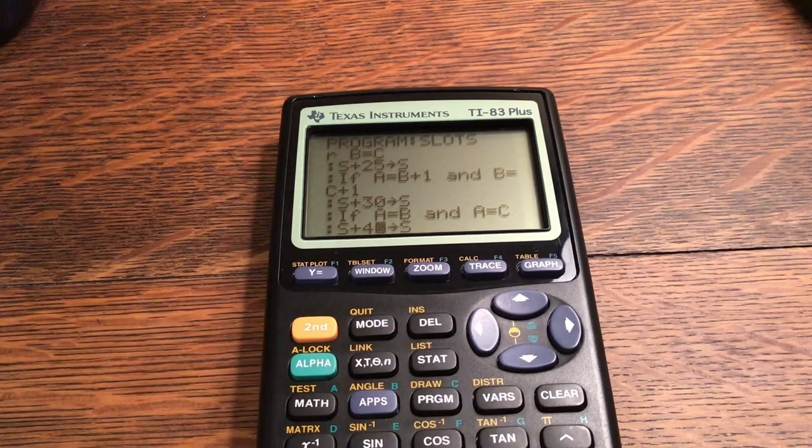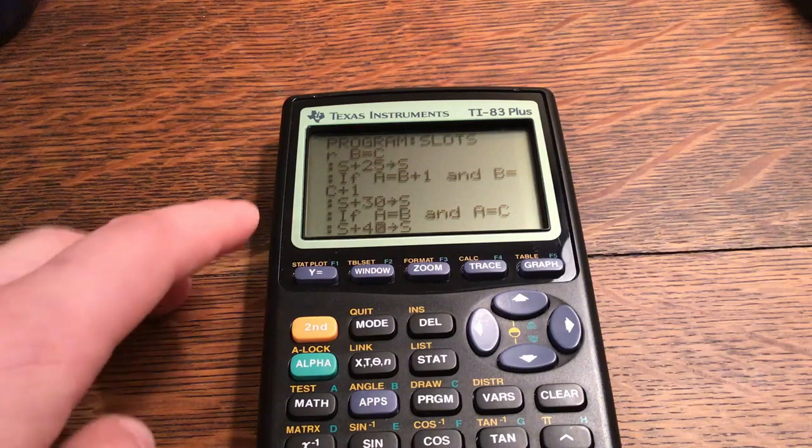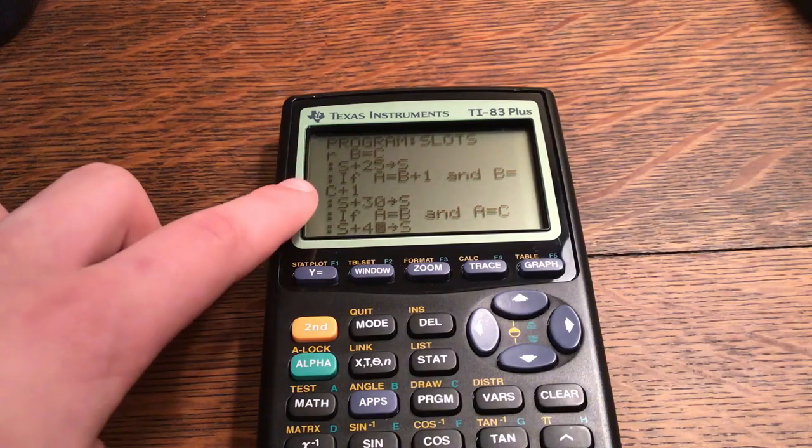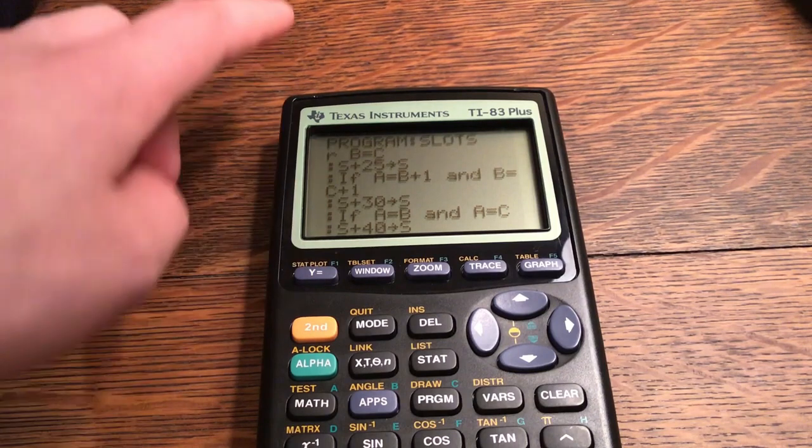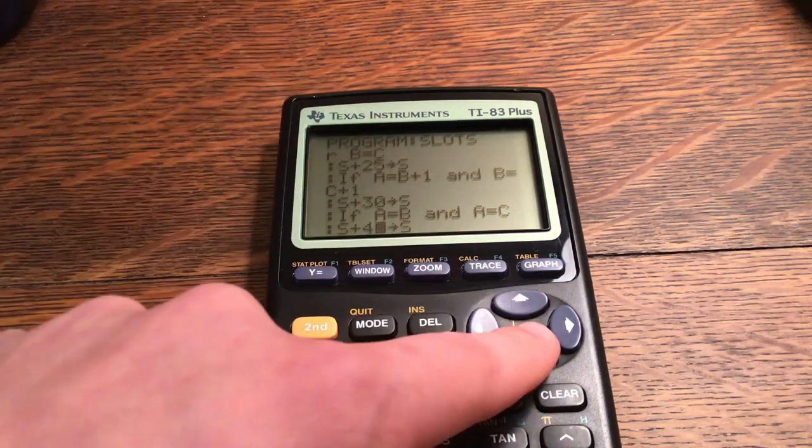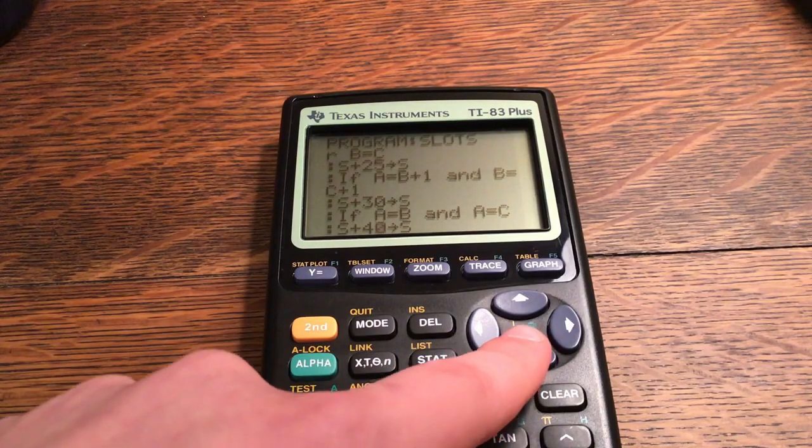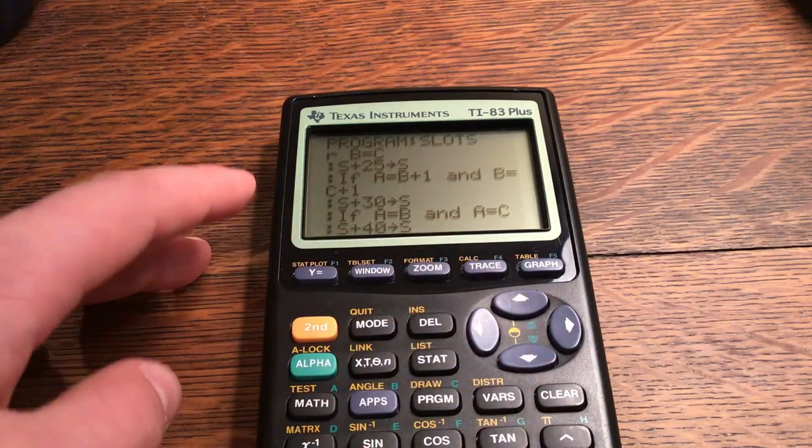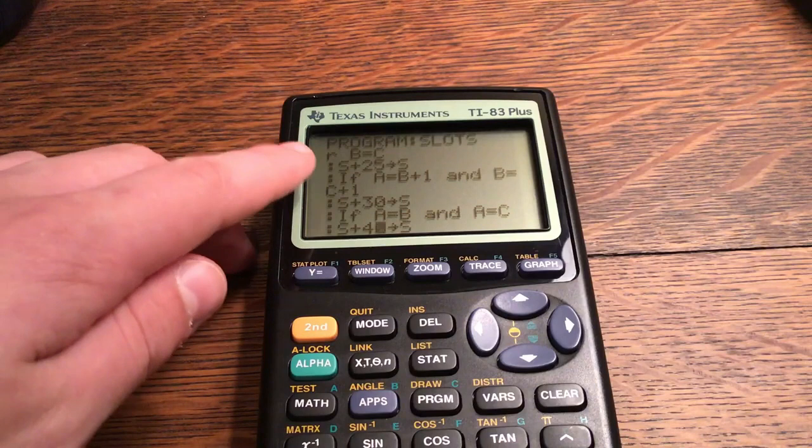If A is equal to B and A is equal to C, S plus 40 stored to S. So I actually kind of forgot about this one. So you get another 40 points on top of that. So you get 165 points for getting a seven seven seven, so it's quite a bit and that's good.